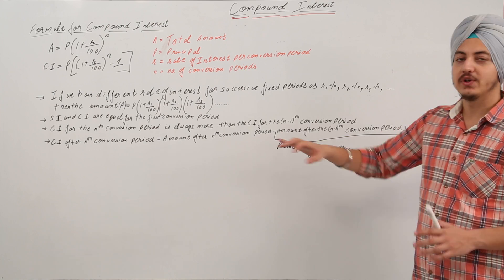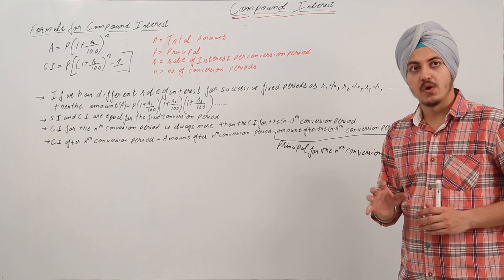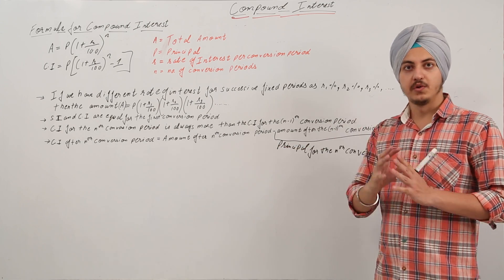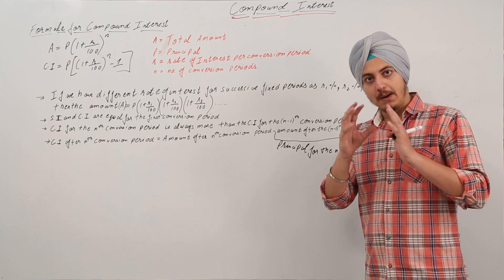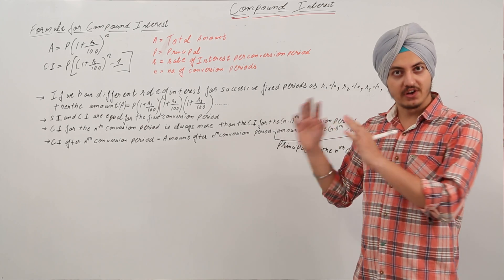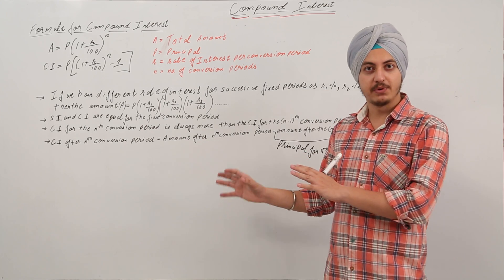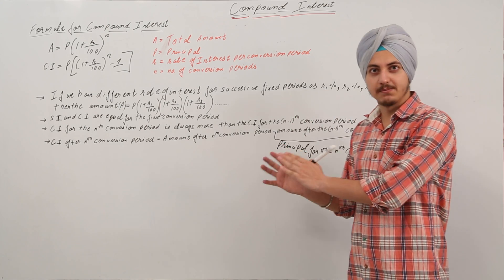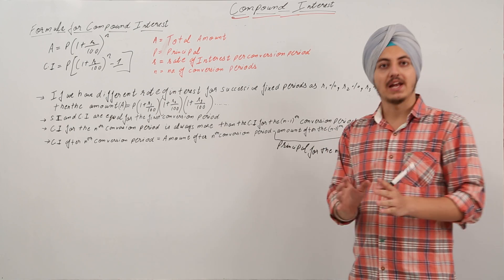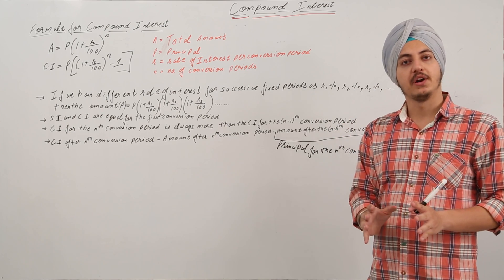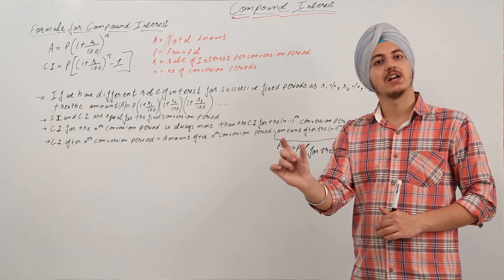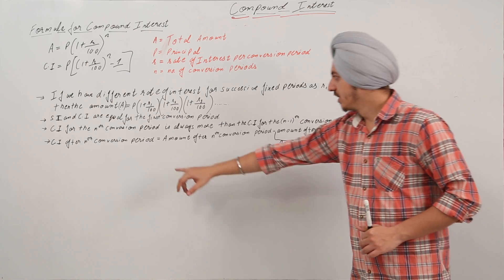If we have to calculate the compound interest for the N-1th conversion period, we do it by taking the amount after the N-1th conversion period minus the principal for that N-1th conversion period. This gives us the interest for that specific period only.